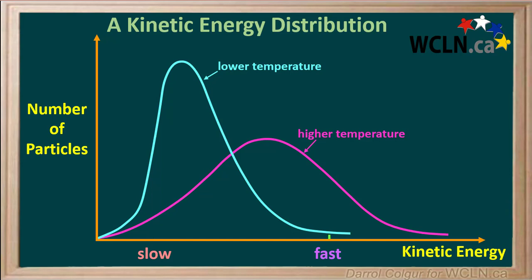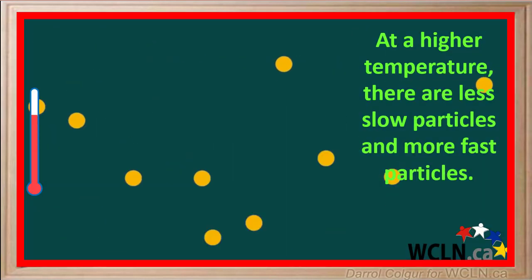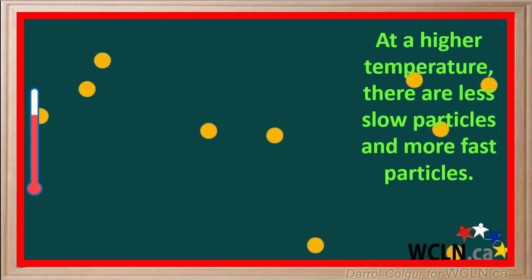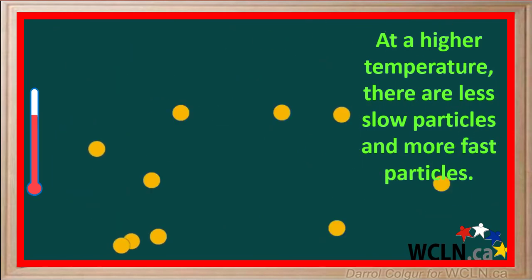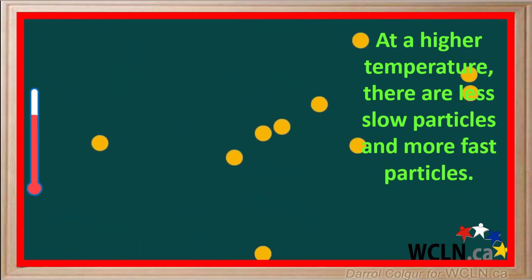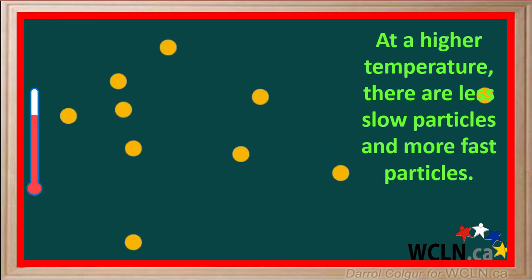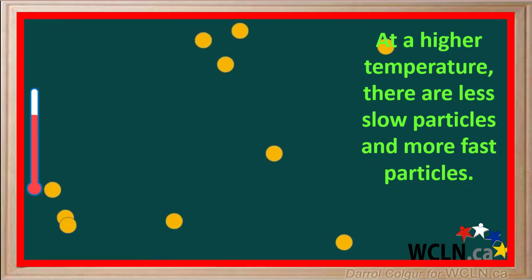If we consider higher kinetic energy or faster speeds, at higher temperature there are more fast particles. It makes sense that at higher temperatures there are fewer slow particles and more fast particles.